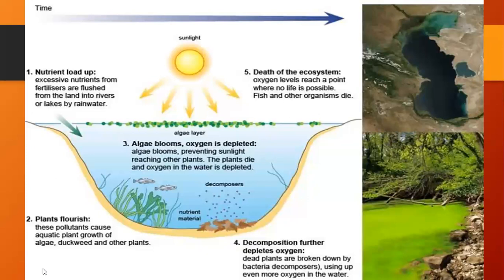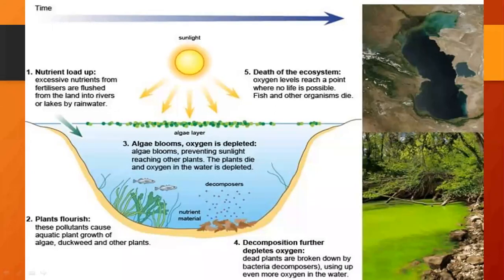So, this is about what happens actually in eutrophication — this is how the steps take place: one, two, three, four. The numbers are in the input; it's for your better understanding. Nutrient load up, then plant flourish — the sage grasses were grown here. Then nutrients loading up takes place. Later, decomposition further depletes oxygen — the decomposers take the oxygen. Algal blooms grow on the surface and the oxygen is depleted, leading to death of the ecosystem — oxygen levels reach a point where there is no life possible in this water. Finally, all the sedimentation takes place and it becomes total land.